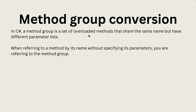Method grouping is a feature introduced in C# 11 where we can create a method with the same name but with different parameters. When referring to a method by its name without specifying its parameters, you are referring to a method group. This is what is called method group conversion, which was introduced in C# 11.